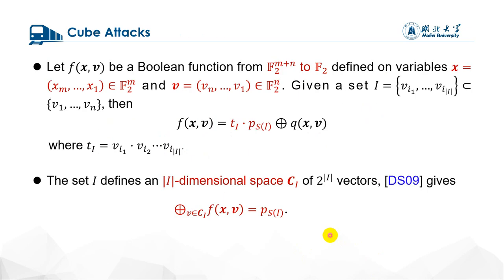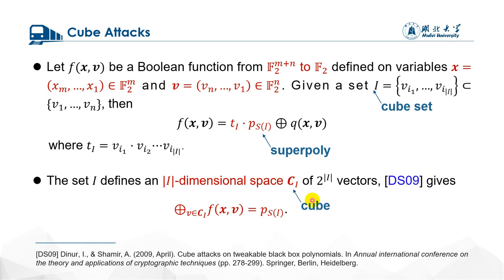This work focuses on the security of KNOT-AEAD against algebraic attacks, particularly the cube-like attacks. So we briefly introduce the cube attacks and the conditional cube attacks here. Assuming that f is a Boolean function, given a set I, then f can be represented as this form. We call this set I cube set, and p_SI superpoly. The set I defines a space C_I, we call it cube. Then the XOR sum of the function f on the space C_I, we call cube sum, is equal to p_SI.